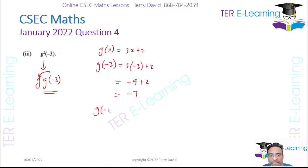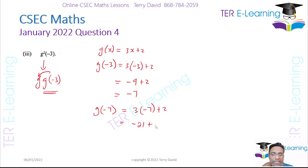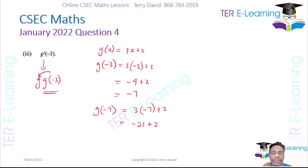Now we take that answer, −7, and plug it back into g. So g(−7) = 3 × (−7) + 2 = −21 + 2 = −19. So g²(−3) = −19.